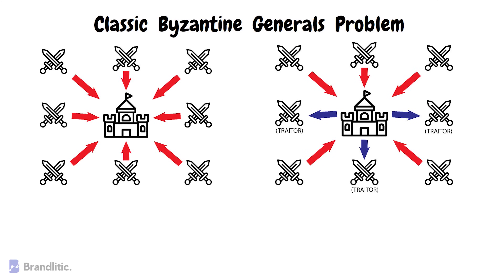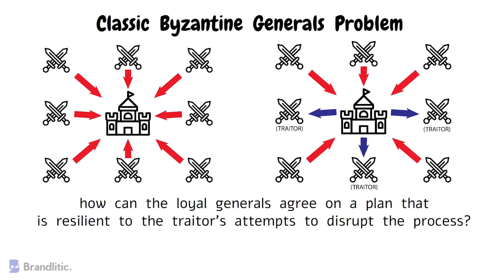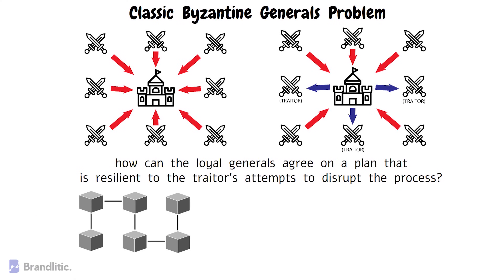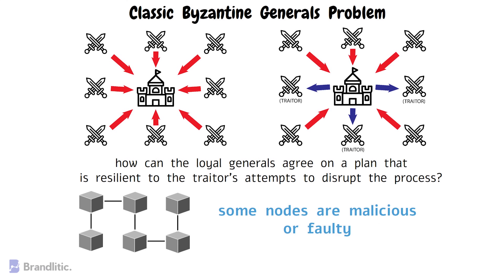However, some of the generals may be traitors who want to sabotage the plan. The problem is: how can loyal generals agree on a plan that is resilient to the traitors' attempt to disrupt the process? In essence, the Byzantine generals problem demonstrates the challenge of achieving consensus in a distributed system, especially when some nodes are malicious or faulty.